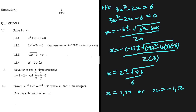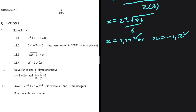When you substitute these values of x back into your equation, it's going to be satisfied — you're going to get 6 on both sides. For 1.1.3, we have the square root of 2x plus 1 equals x minus 1.